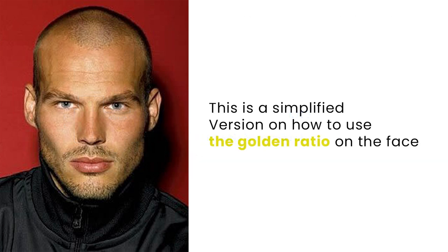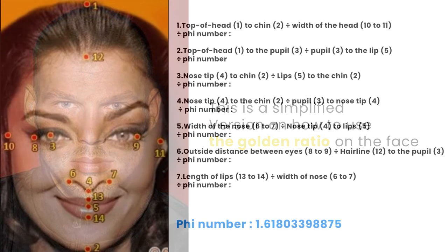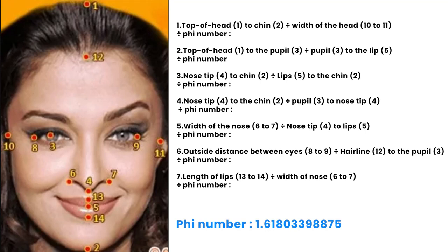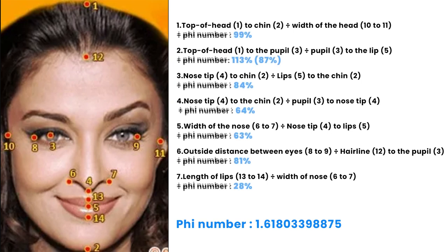Now this is a very simplified version of how to calculate the golden ratio of your face. The in-depth version lets you actually calculate percentages. You take a photo or print it, mark all the key points as shown in the pictures, and we can measure seven ratios. Then you divide the final results by the Phi number to get the percentage of how close you are to the golden ratio on each ratio measure.